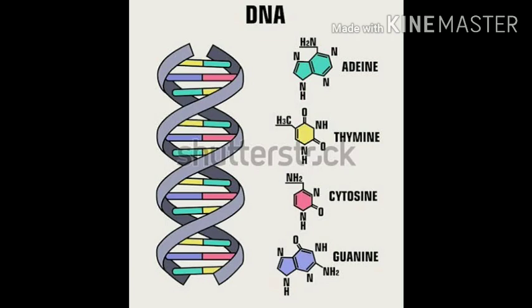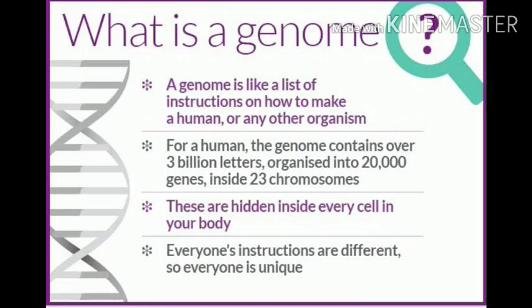The bases are: A - Adenine, C - Cytosine, T - Thymine, and G - Guanine. Every human has around 20,000 genes and 3 billion bases. This entire sequence of genes and bases is called the genome. This is just an introduction about the genome; you will study in detail about all this in the higher classes.